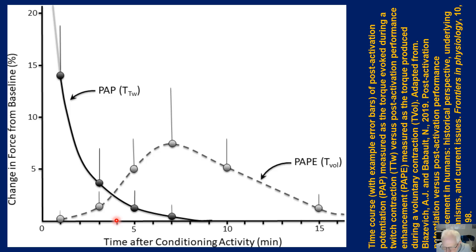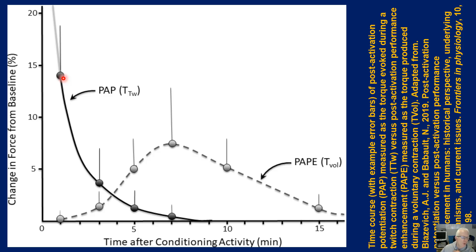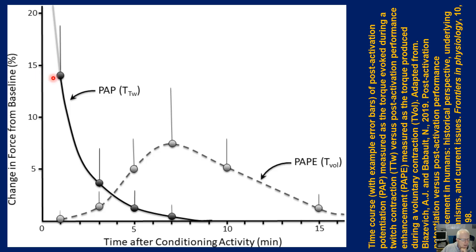So there are two conditions. There is the conventional PAP, whereby we have used a maximal twitch in the muscle — ideally, you've electrically stimulated the muscle. And what they show is if you electrically stimulate the muscle, you get a consequent response in force output. What we're showing here is the change in force from baseline — what happens when you stimulate the muscle electrically — and then the association between the change from baseline against time.